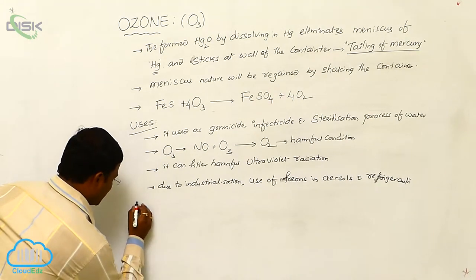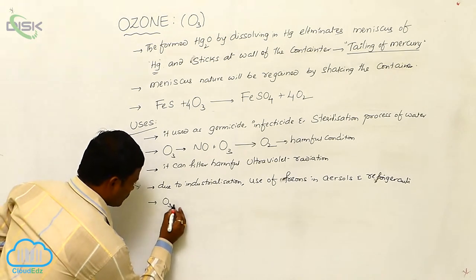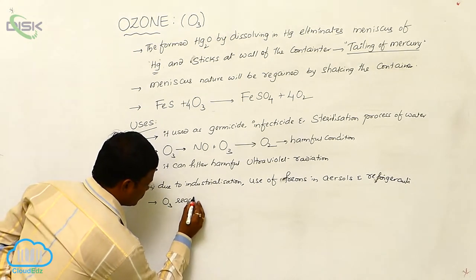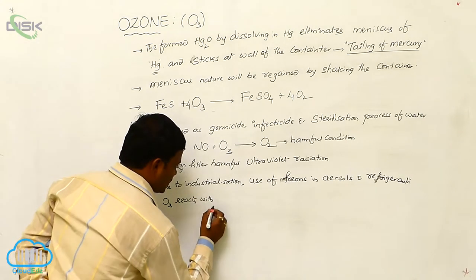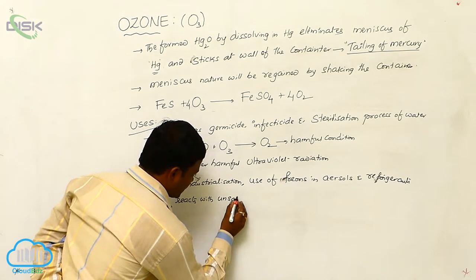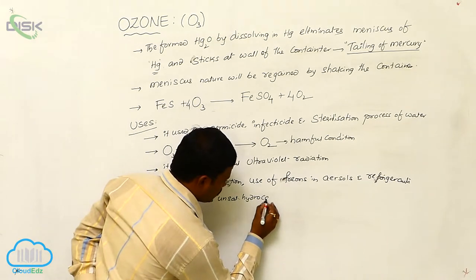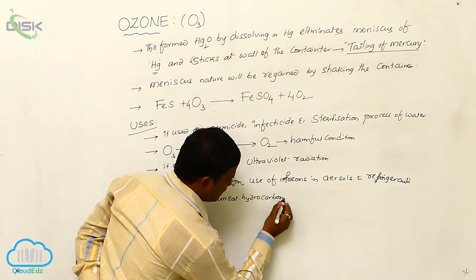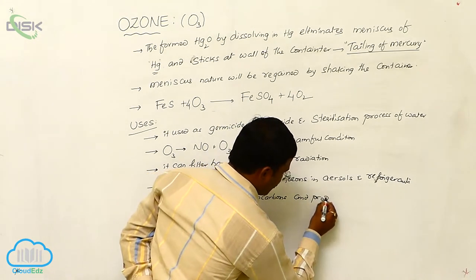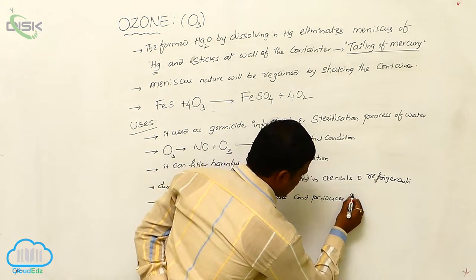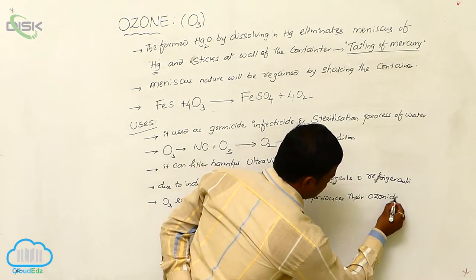One more important chemical reaction is that ozone reacts with unsaturated hydrocarbons — such as alkenes and alkynes — and produces their ozonides.